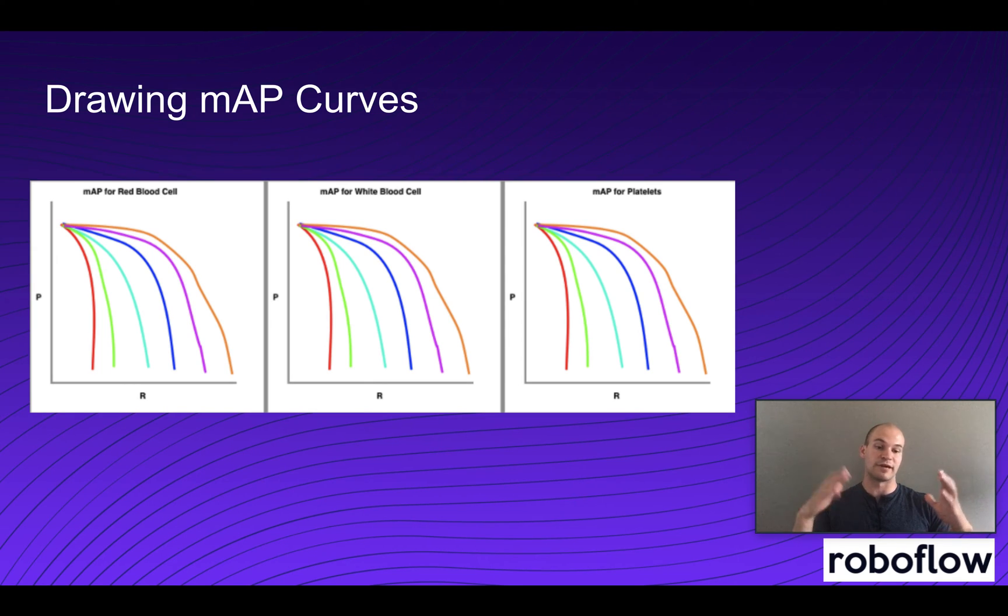So maybe we have an IOU metric threshold here of only 0.1, so only 10% of that little overlapping box needs to match up with the test ground truth box. And so that's easier for the model to get and therefore the precision recall curve is higher. Now here in the red we have the most stringent IOU, maybe 90% overlap needs to be made to be counting the prediction as correct. And that's why the precision recall curve drops off a lot faster.